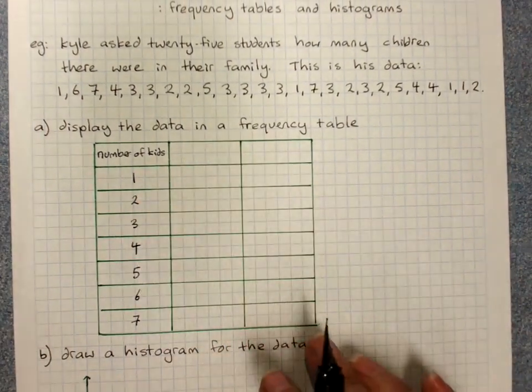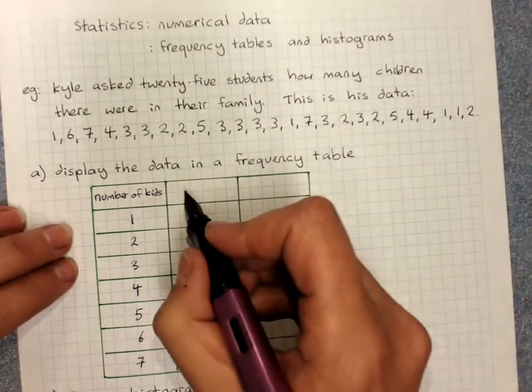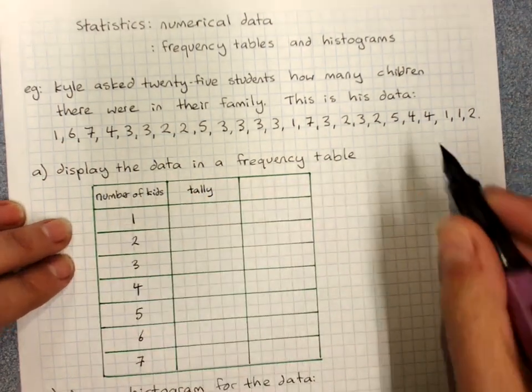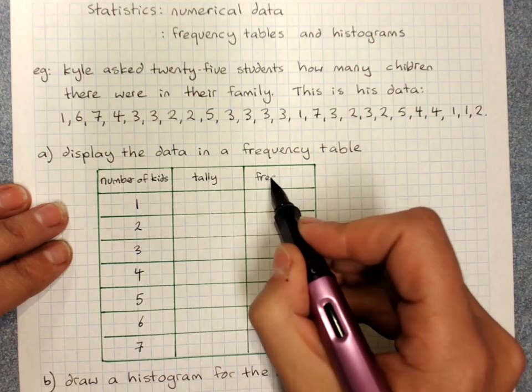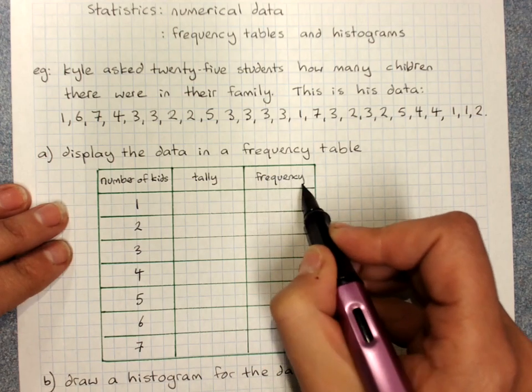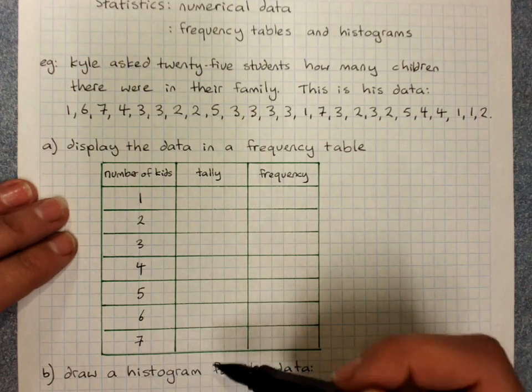The middle column is always a tally to help us get this right. And the end column is always the frequency, which is the number of people who gave that particular answer.